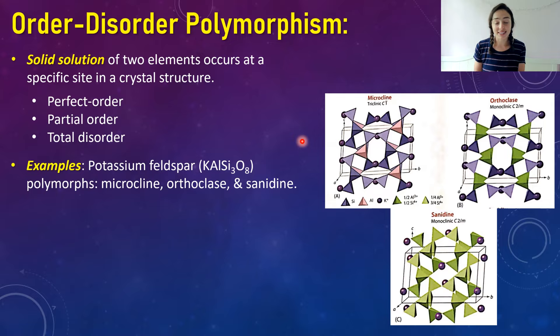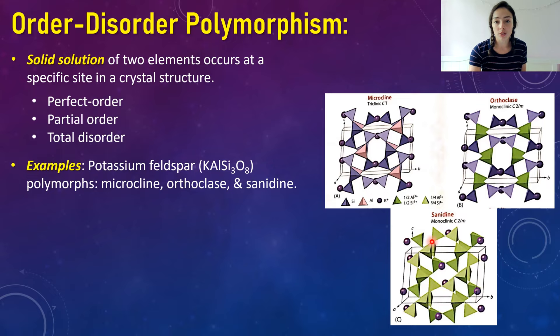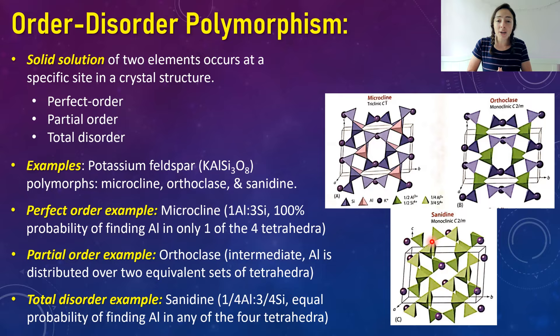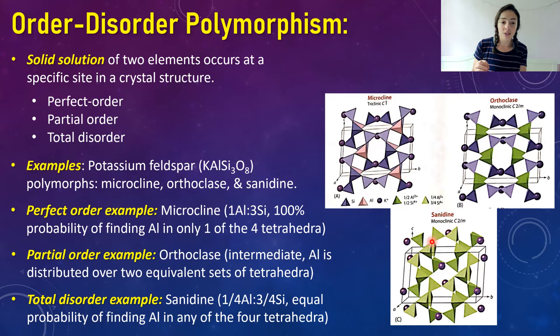The example of order-disorder polymorphism is potassium feldspar. K-spar is a potassium aluminum silicate mineral with polymorphs microcline, orthoclase, and sanidine. Microcline is an example of a perfect-order polymorph: one aluminum³⁺ ion fills one of the four tetrahedral sites in its structure and all three other tetrahedral sites are occupied by silicon. This means there's a 100% probability of finding aluminum in one specific tetrahedral site — more ordered than sanidine's total disorder.